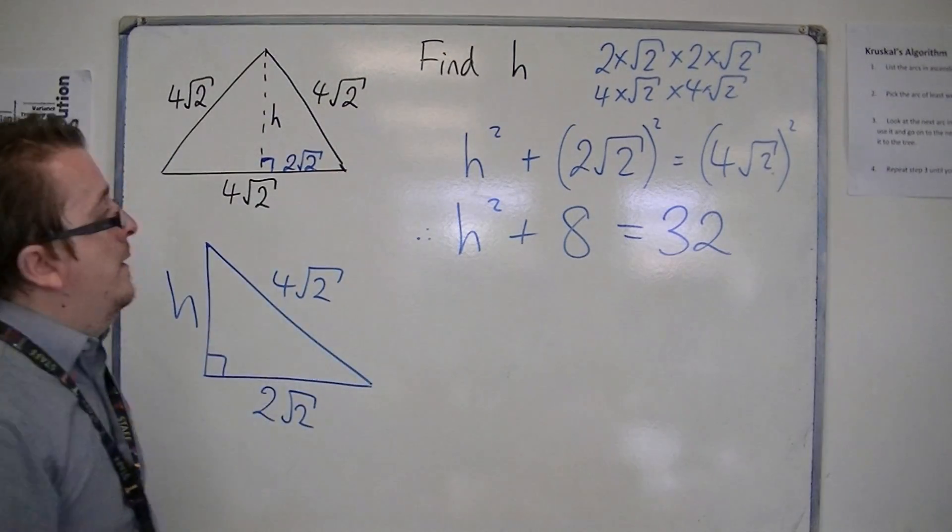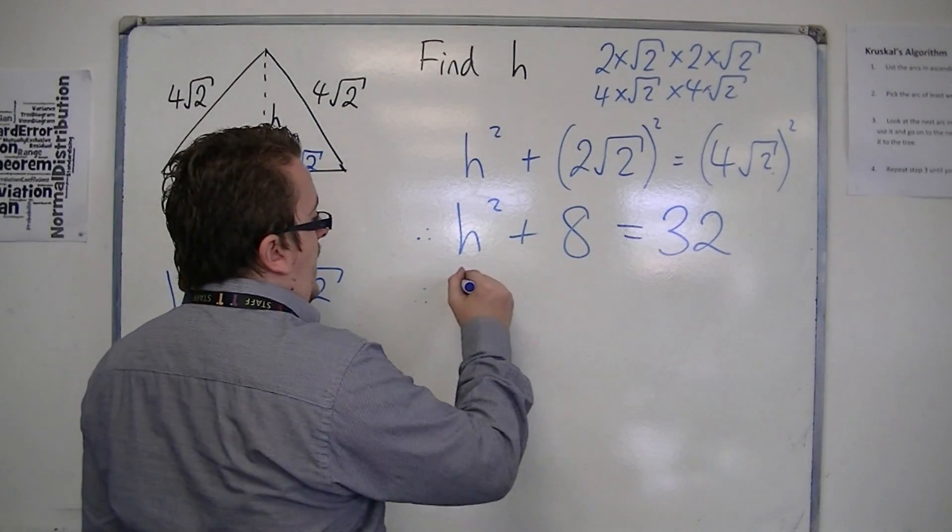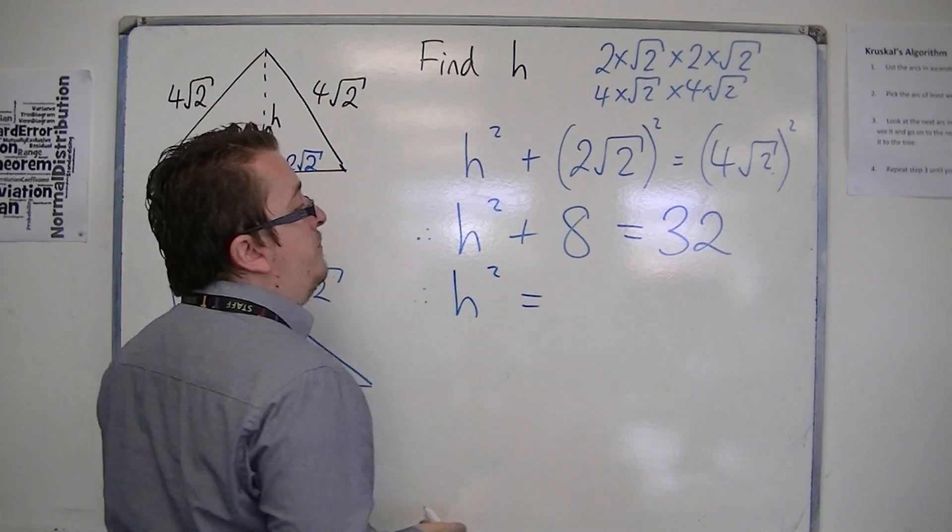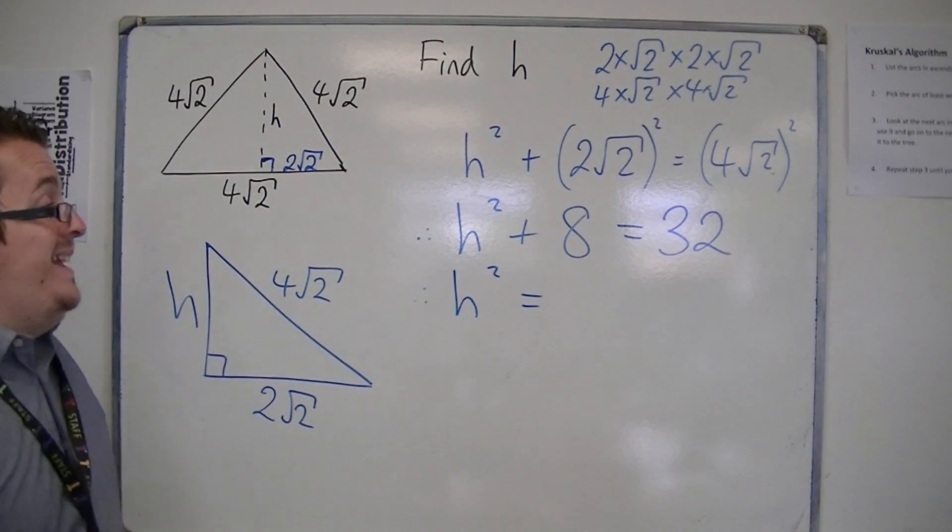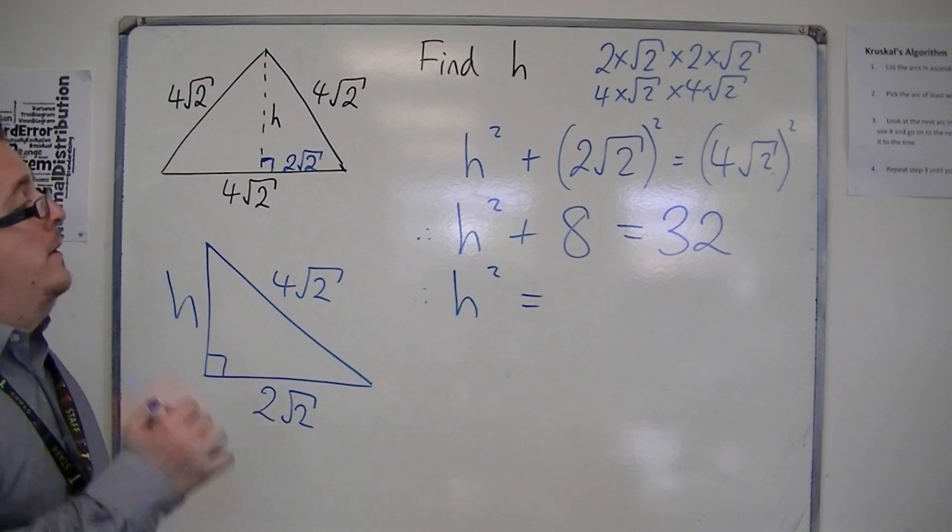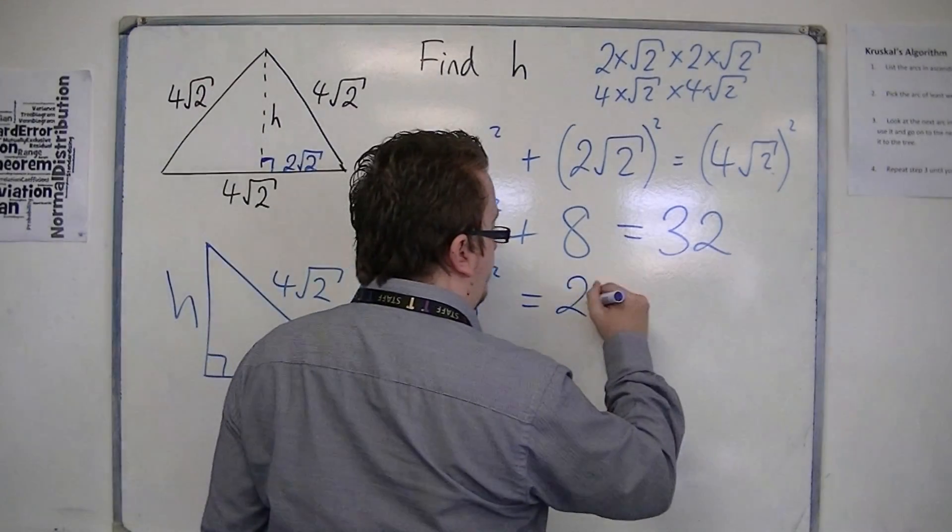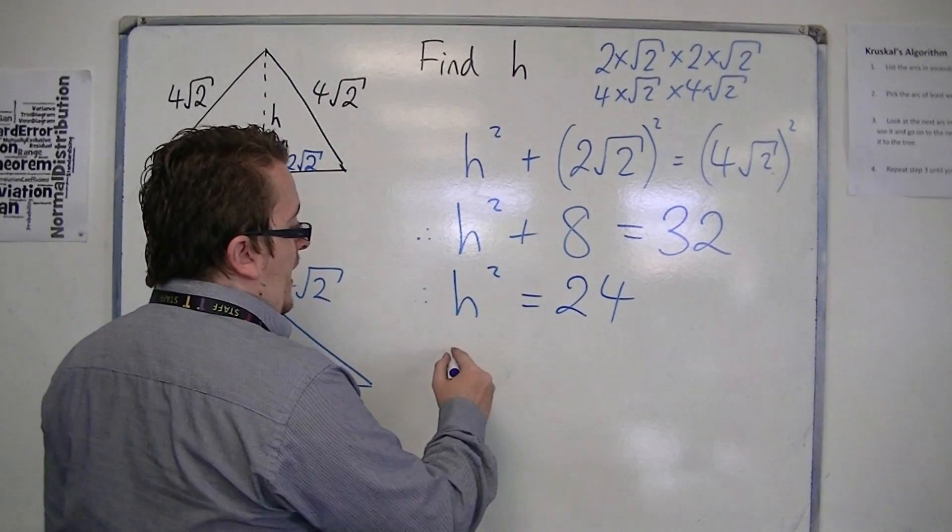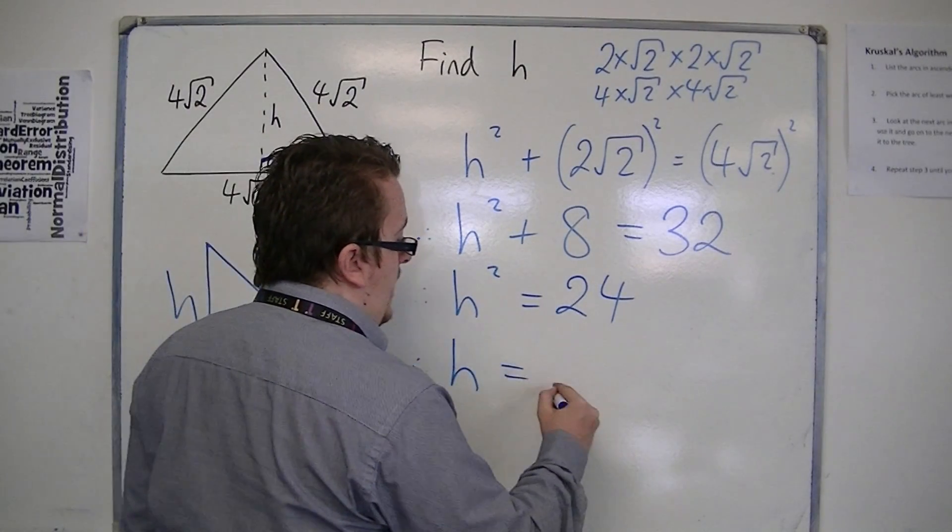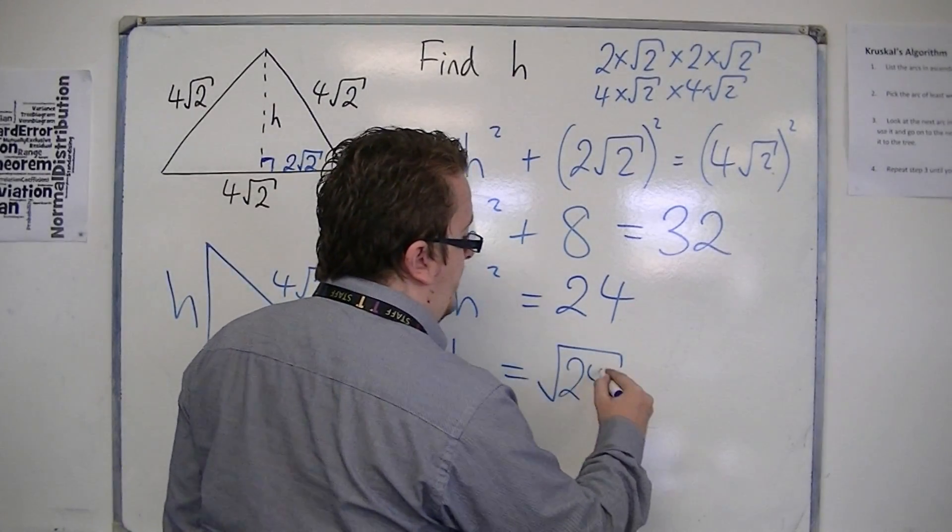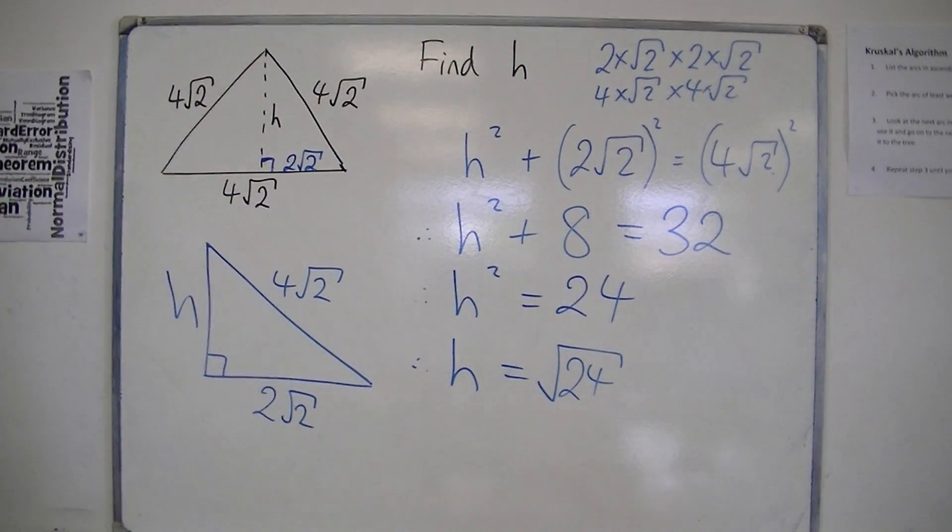Then, that means that h squared is going to be 32 take away 8, which gets us down to 24. So h is the square root of 24, root 24.